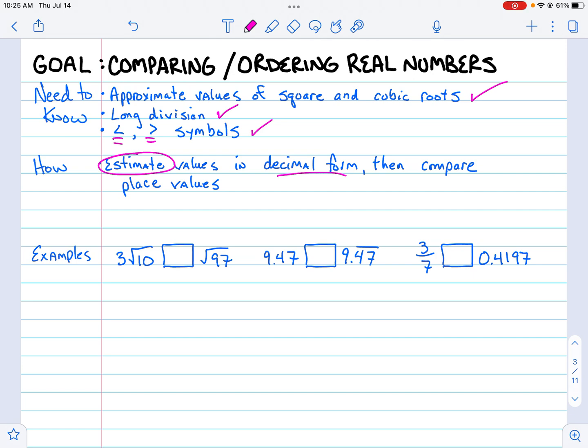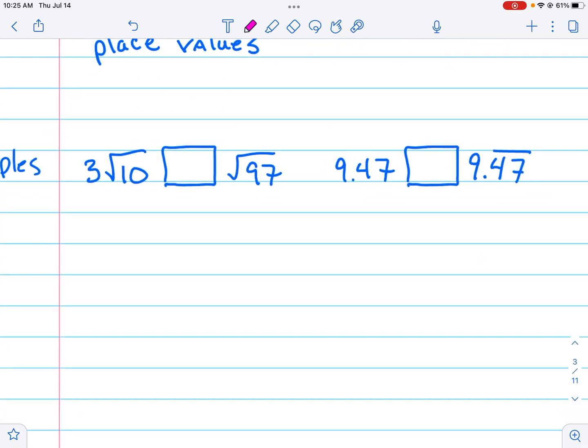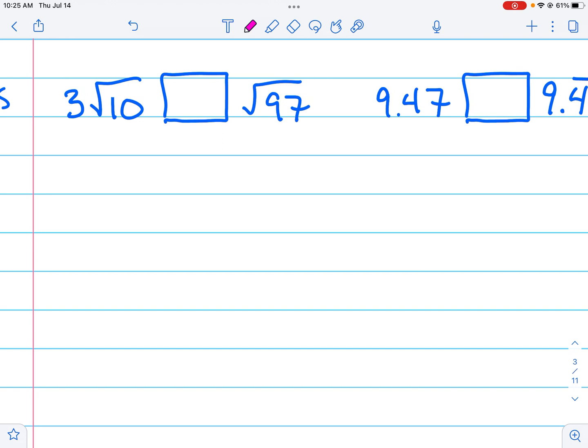...and then simply compare their place values. I have three examples down below, so let's dive in. In this first example, I observe that this 3 next to the square root of 10 means 3 times the square root of 10, and I know that the square root of 10 is just a little more than the square root of 9. So I'm going to guess it's about 3.1, so this side is about 9.3 give or take.